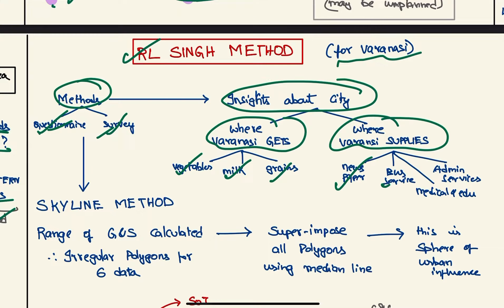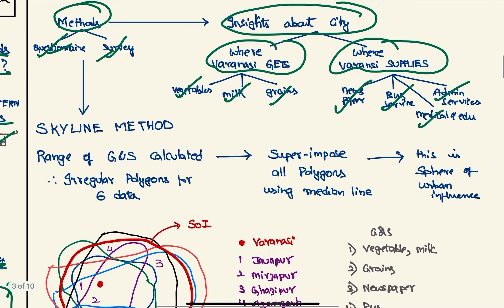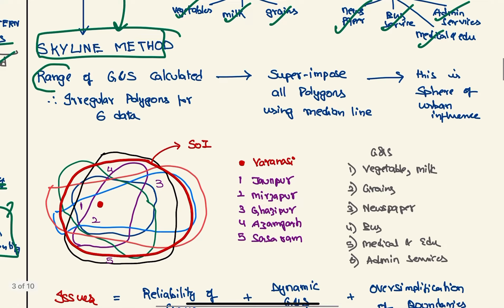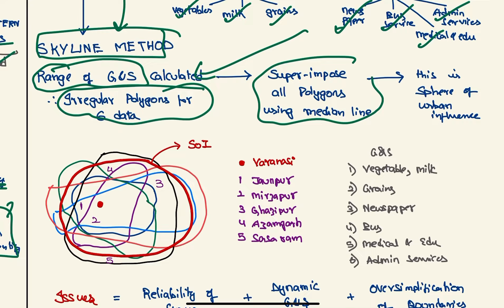So using this survey and questionnaire, he uses the skyline approach carrier method. In it, he calculates range of goods and services for each of the six data, so he draws six regular polygons for the six data. Next, he superimposes all polygons using a median line. For example, all these are there, so he calculates all of them and he calculates the median line to this one. Similarly, he does the same thing for each polygon and then several dots came; all these dots are connected.